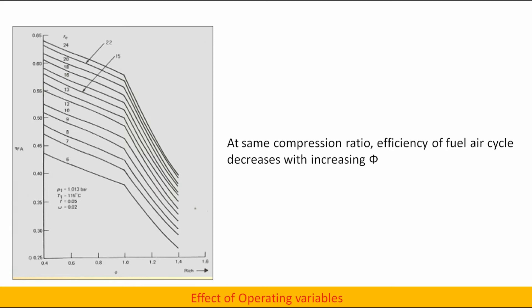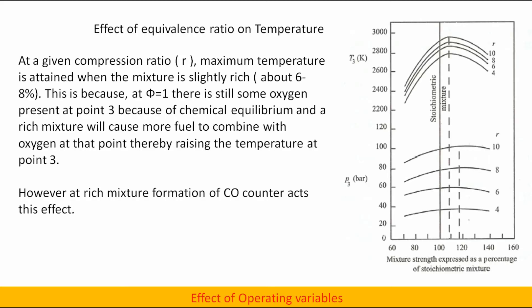Effect of equivalence ratio on temperature: at a given compression ratio R, maximum temperature is attained when the mixture is slightly rich (about 6 to 8%). This is because at φ = 1 there is still some oxygen present at point 3 because of chemical equilibrium, and a rich mixture will cause more fuel to combine with oxygen at that point, thereby raising the temperature at point 3.